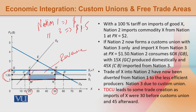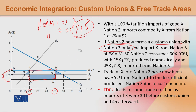Now, Nation 2 forms a custom union with Nation 3 only. Nation 3's price is $1.5. Due to the custom union, tariffs on Nation 3 have been removed. So the price you get internationally from Nation 3 will be $1.5. Since no tariff is applied now, the state will receive no revenue.